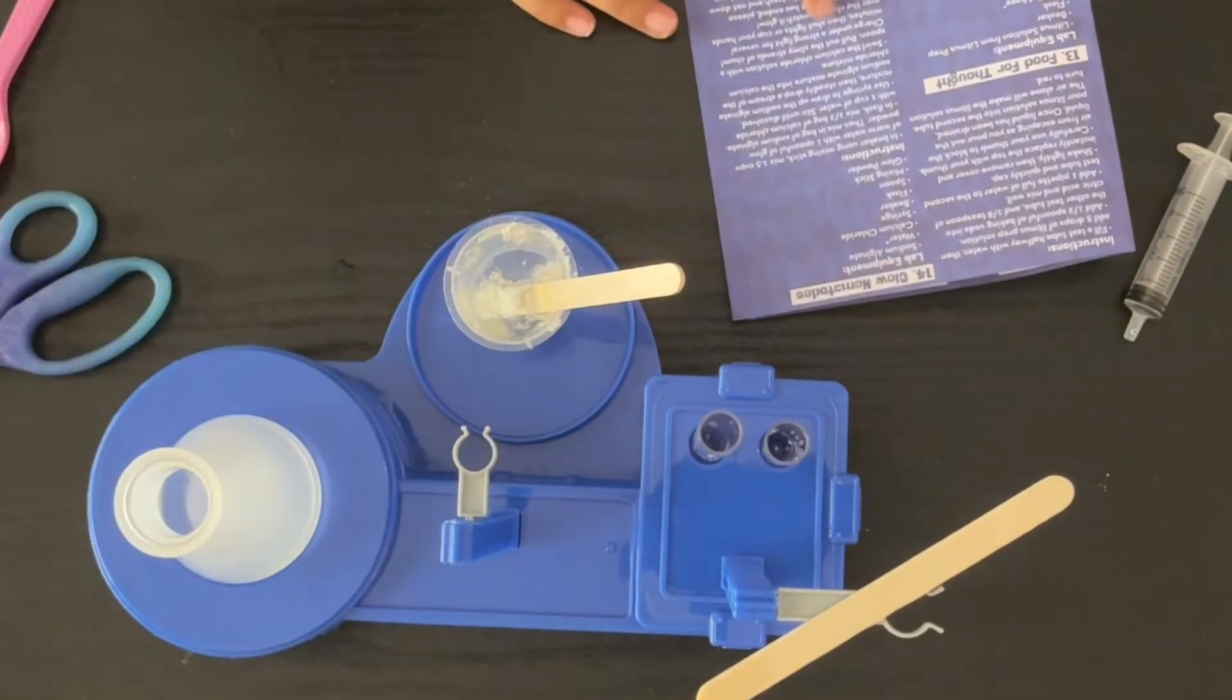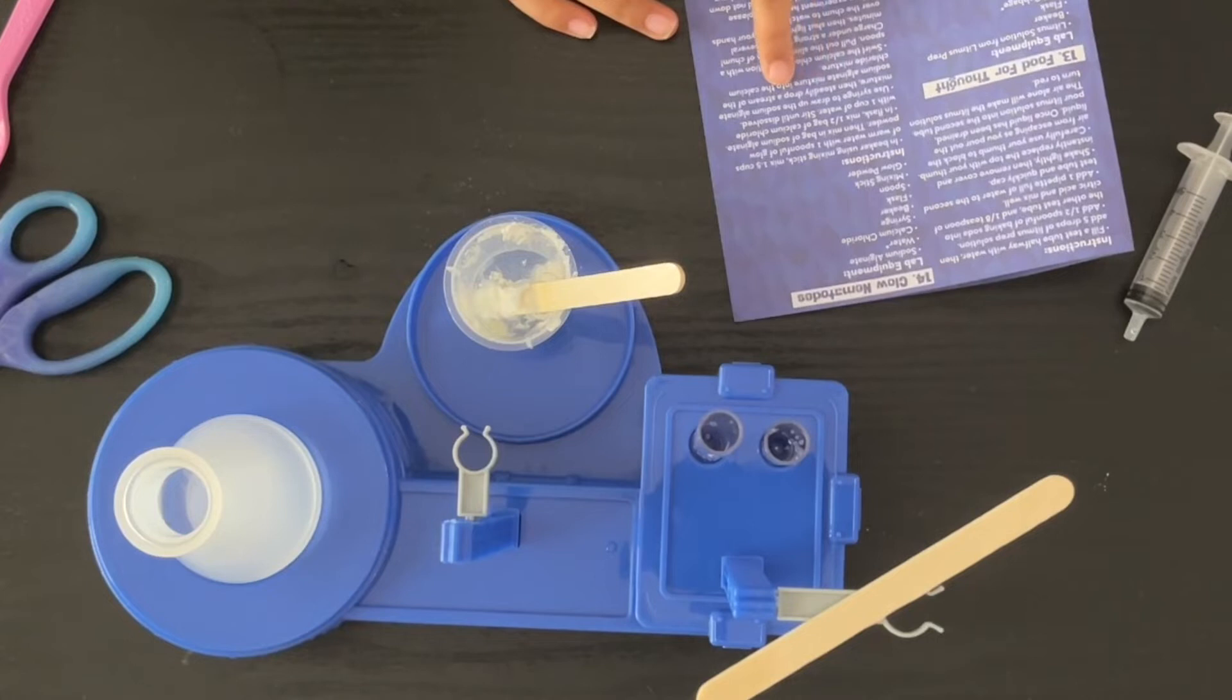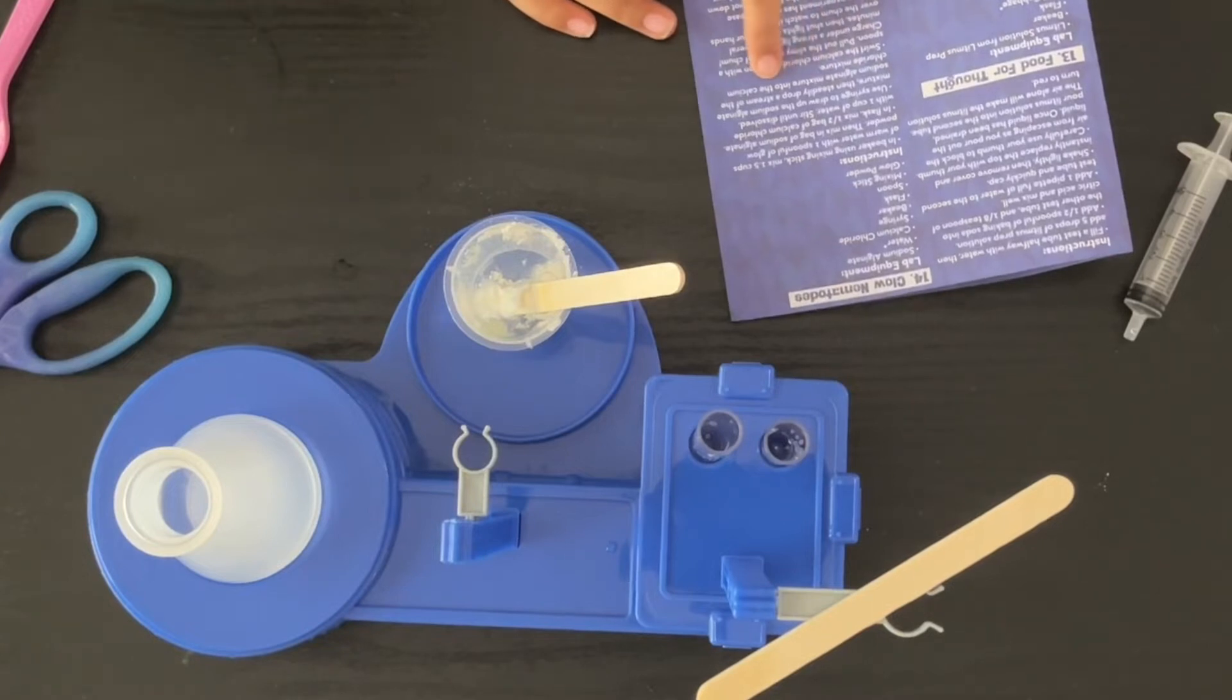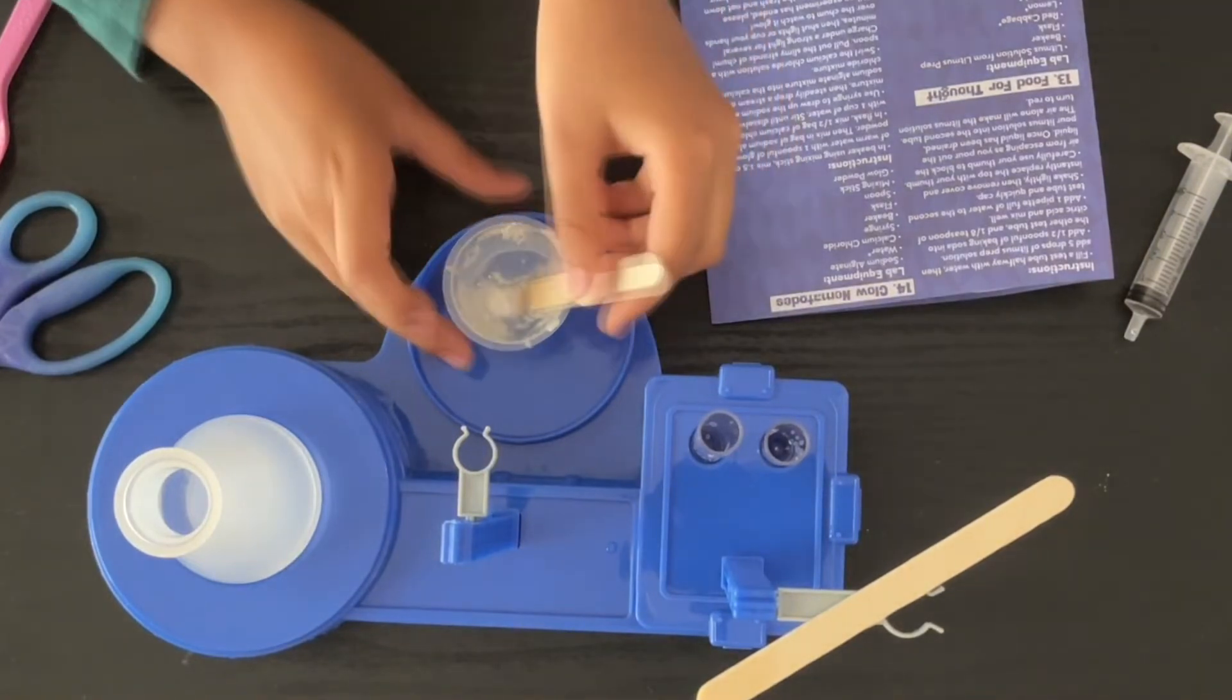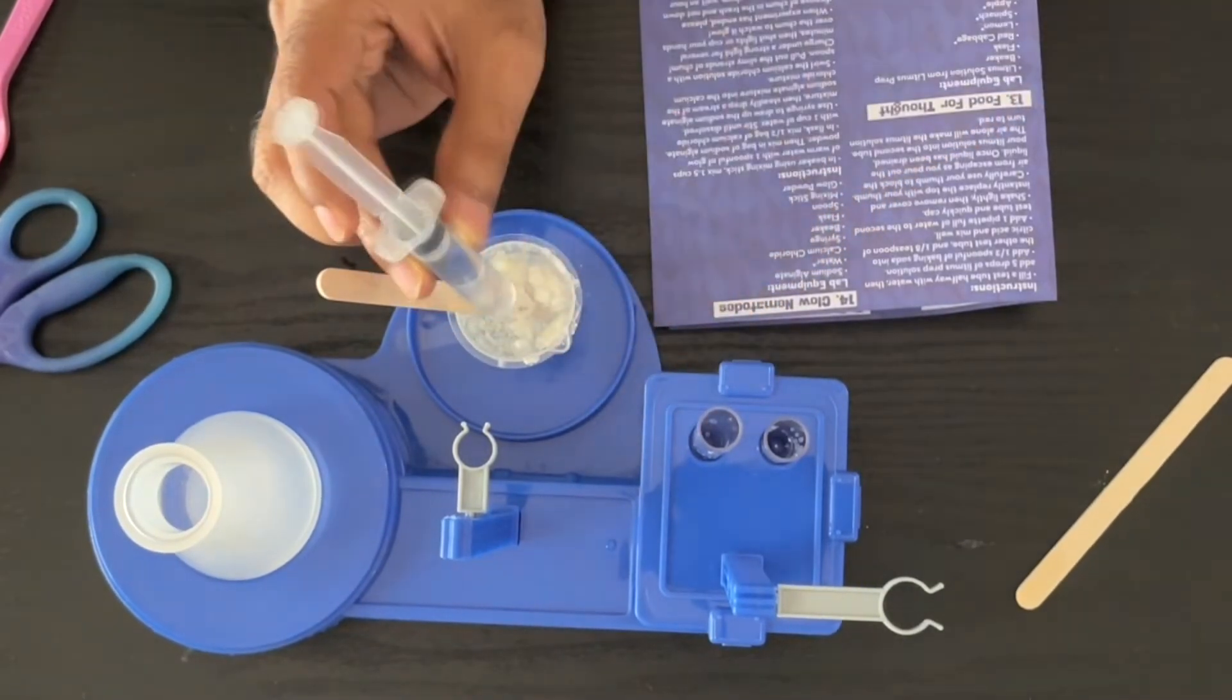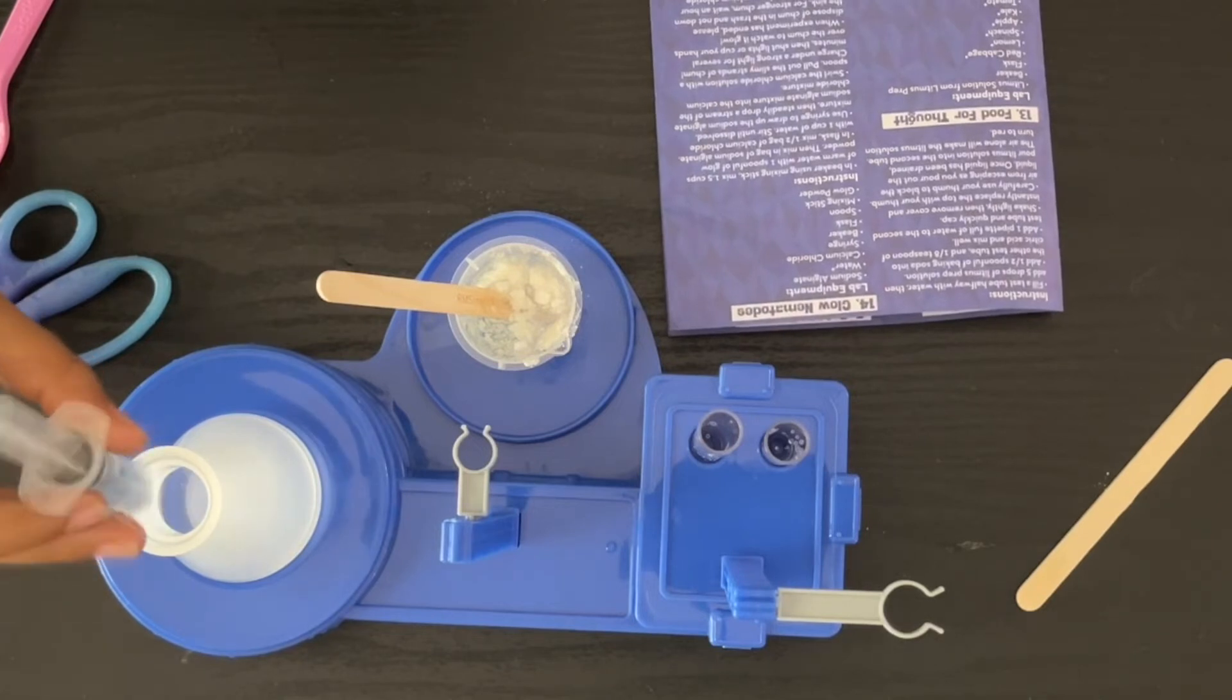Next step. Use syringe to drop the sodium alginate mixture. Then steadily drop a stream of the sodium alginate mixture into the calcium chloride mixture. Which one is sodium alginate mixture? This one. Should I take the water or the powder too? Okay. And then steadily drop in that.